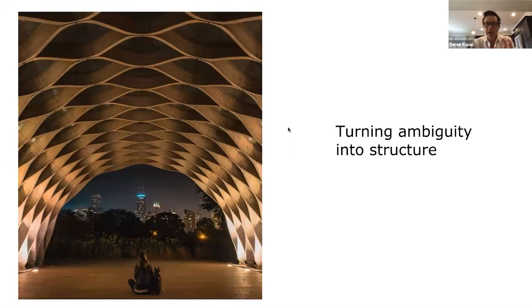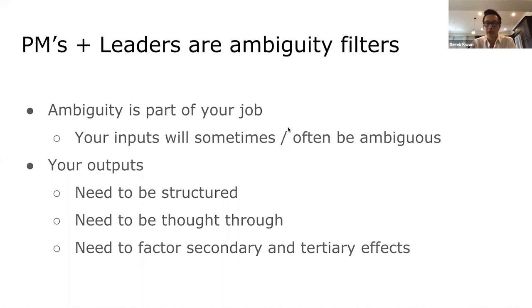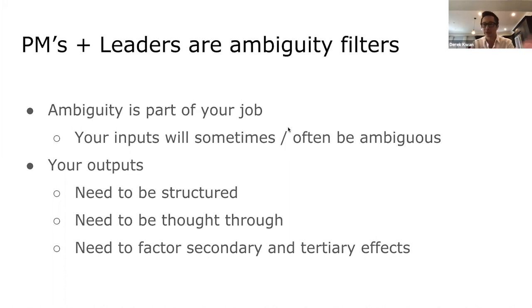Now let's talk about turning ambiguity into structure. Product managers and leaders — and product managers are de facto leaders — are ambiguity filters. Ambiguity is part of your job; your inputs will sometimes or often be ambiguous. Even though your inputs will be ambiguous as PMs and leaders, your outputs need to be structured and thought through. You really need to think through the secondary and tertiary effects of your decisions because your outputs cannot be ambiguous.